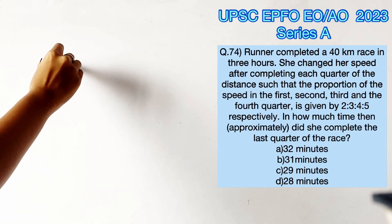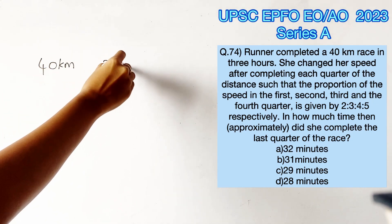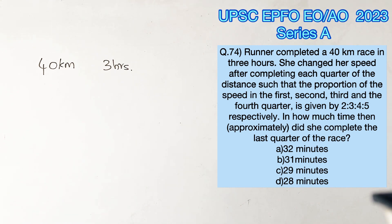Welcome to Aptitude Destination. Please pause the video and read the question completely. A runner is said to have completed a 40 kilometer race in three hours. She has changed her speed for each quarter of the distance.